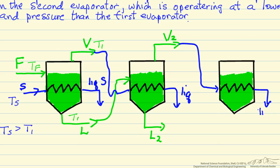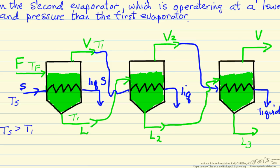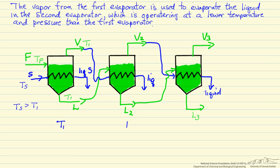The vapor from the second effect is fed into the third heat transfer coil, where the condensed steam leaves at saturation conditions. The concentrated liquid from the second evaporator is fed into the third evaporator, where we get a more concentrated solution L3 and a final vapor stream coming off. We can get a significant improvement in energy efficiency by using the vapor from each previous effect to vaporize the liquid in the next.